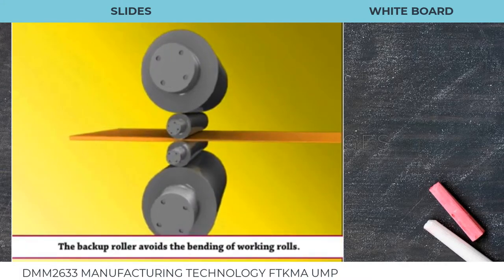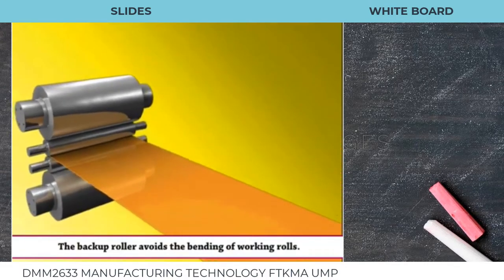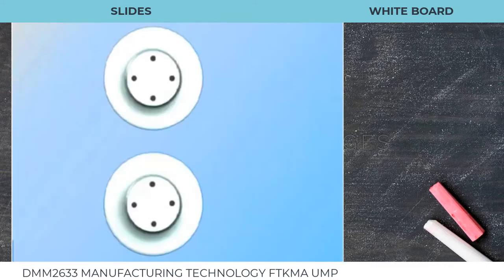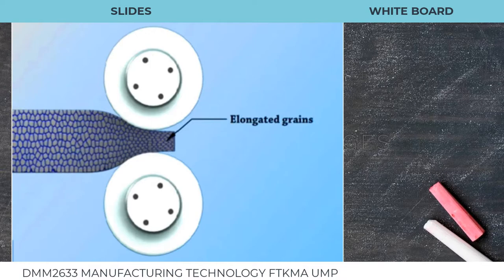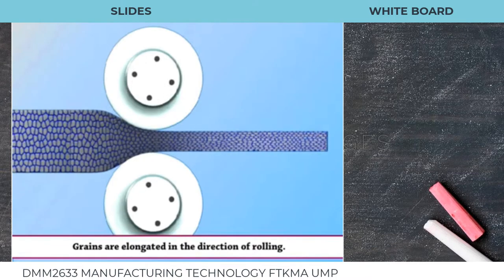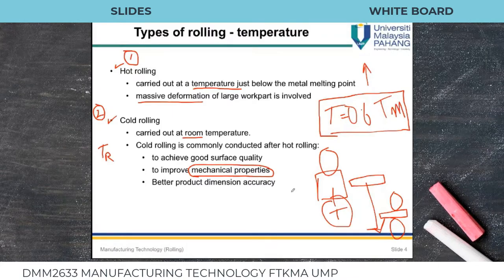The backup roller prevents the bending of working rolls. In cold rolling, the grains are elongated in the direction of rolling, but unlike hot rolling, the grains are not reformed — they remain in the deformed elongated state.